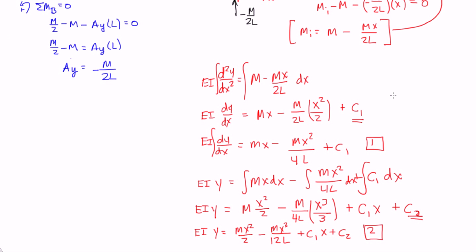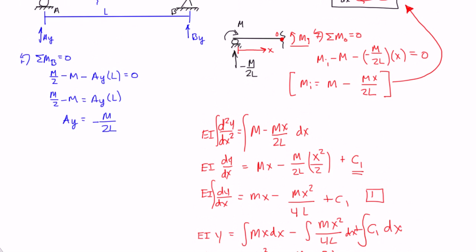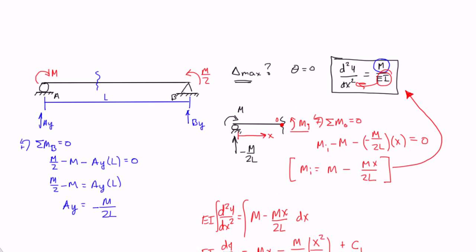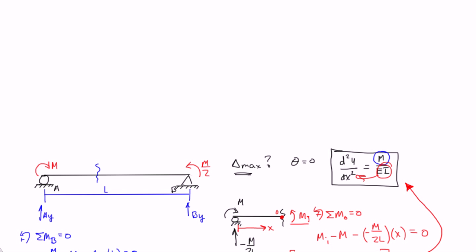Looking at our diagram, we can see that at x equals 0, the deflection, or y, is equal to 0. So we can use this boundary condition in equation 2 to figure out what C2 is.